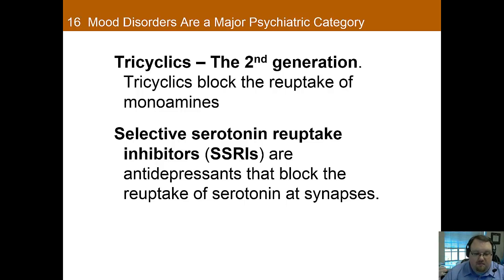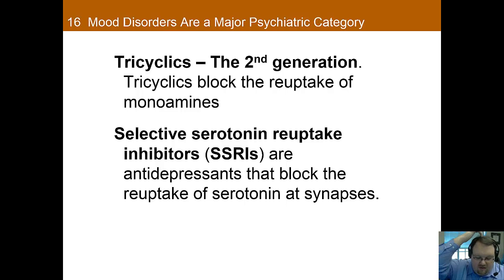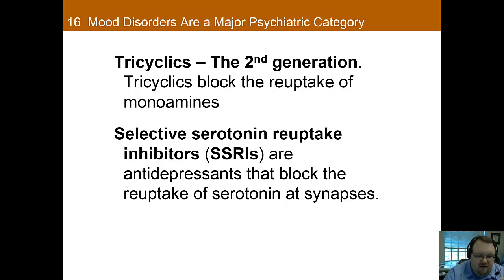Tricyclics work by blocking the reuptake of monoamines. On the presynaptic terminal, the neuron normally recycles neurotransmitters after they're used. By blocking this reuptake, you leave the neurotransmitters available longer, so they can have more of an effect. Tricyclics treat depression very effectively, but cause significant side effects such as sedation — in fact, some tricyclics are now used primarily as sleep medications because they are so sedating.